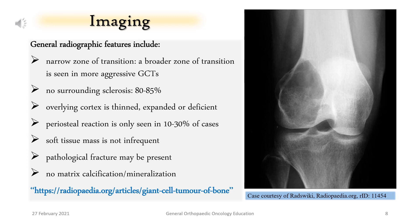General radiographic features include: narrow zone of transition — a broader zone of transition is seen in more aggressive GCTs. No surrounding sclerosis in 80–85% of cases. The overlying cortex is thinned, expanded, or deficient. Periosteal reaction is seen in only 10–30% of cases. Soft tissue mass is not infrequent. Pathological fracture may be present. No matrix calcification or mineralization.